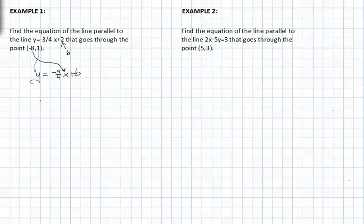When we do this, we get one is equal to negative three-fourths times negative eight plus b. Now the only variable that we need to solve for is b.